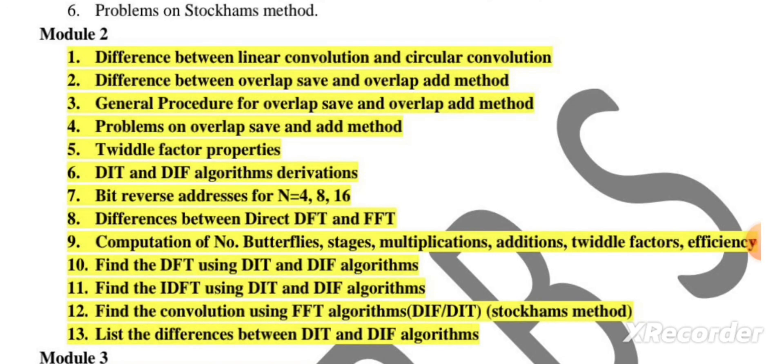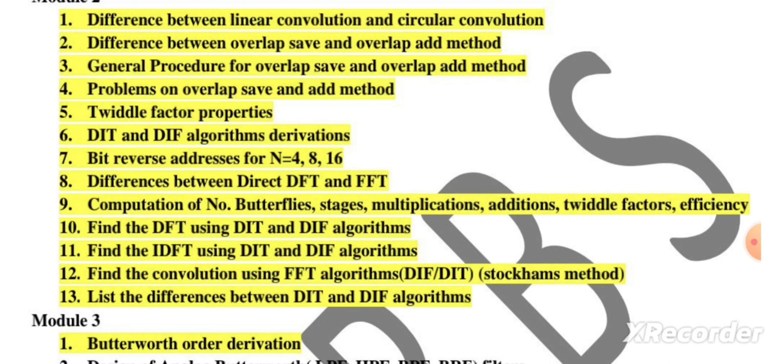Twiddle factor properties, and DIT and DIF algorithm derivations you will see. Bit reverse addresses for n equals 4, 8, and 16. Differences between direct DFT and FFT. Computation of number of butterflies, stages, multiplications, additions, twiddle factors, efficiency will be asked.